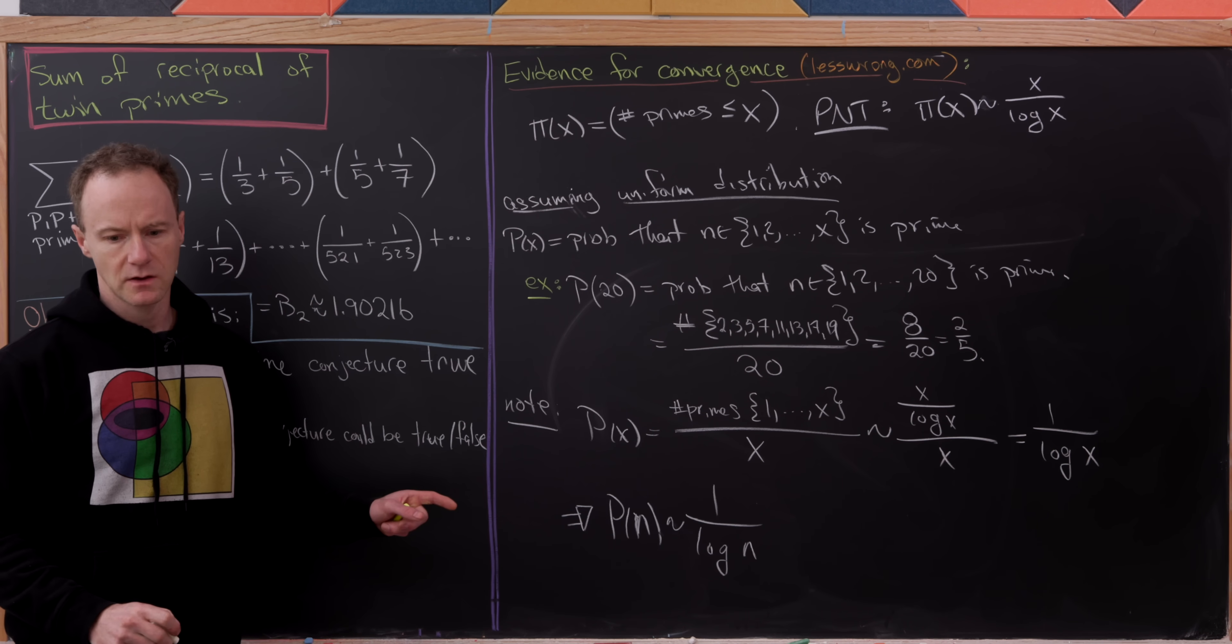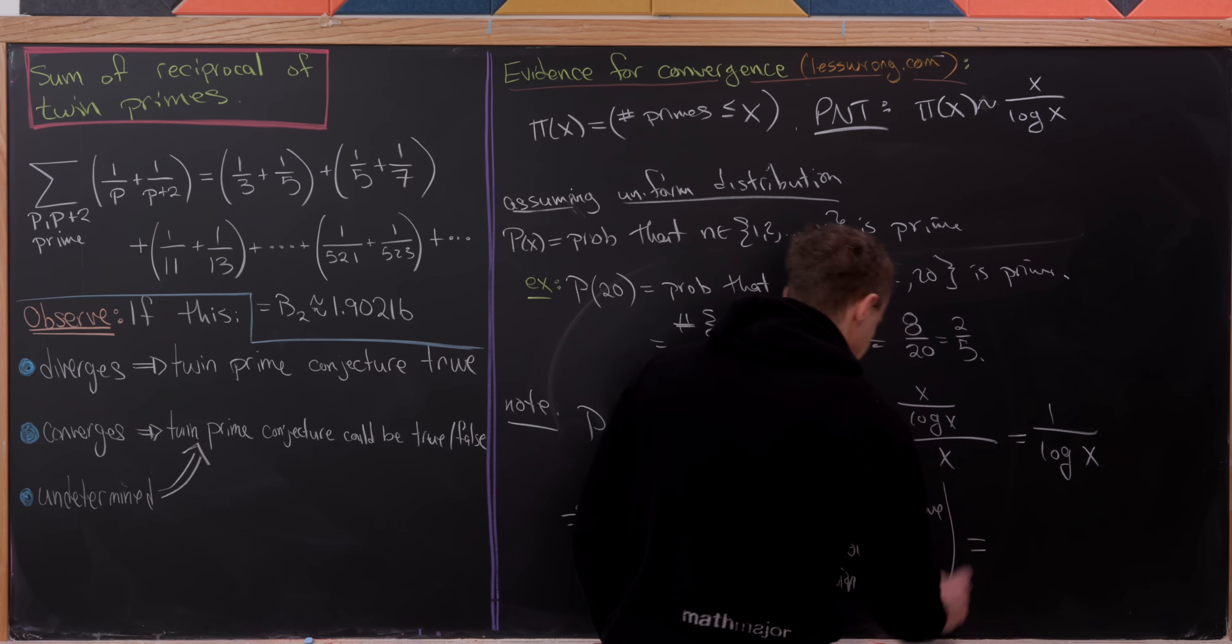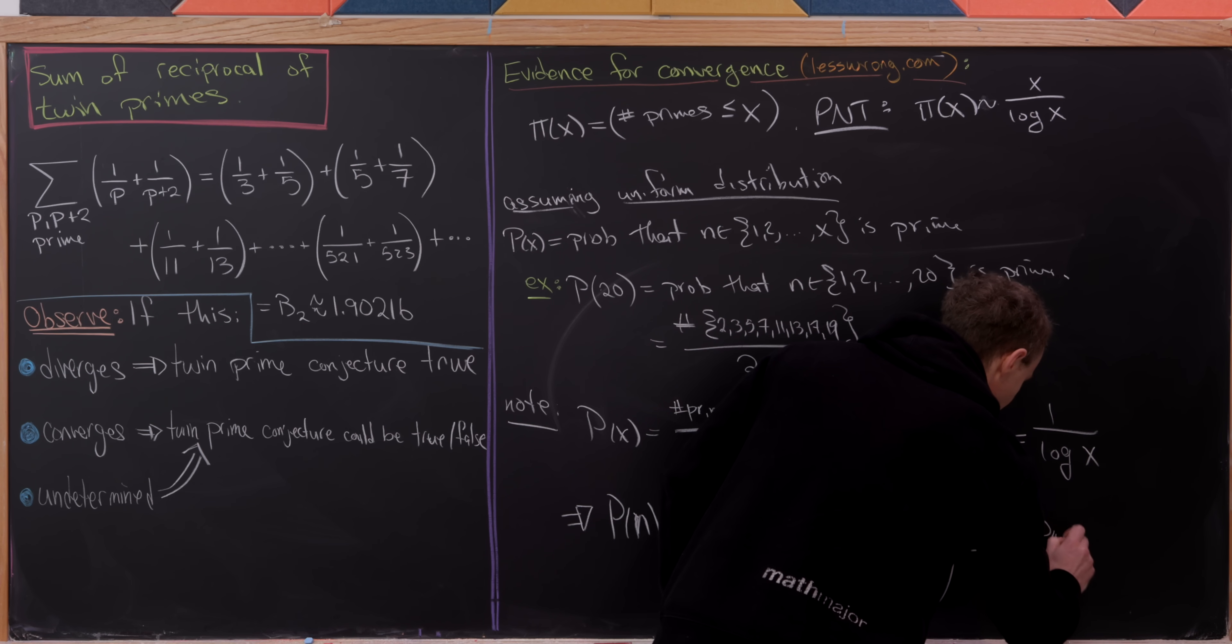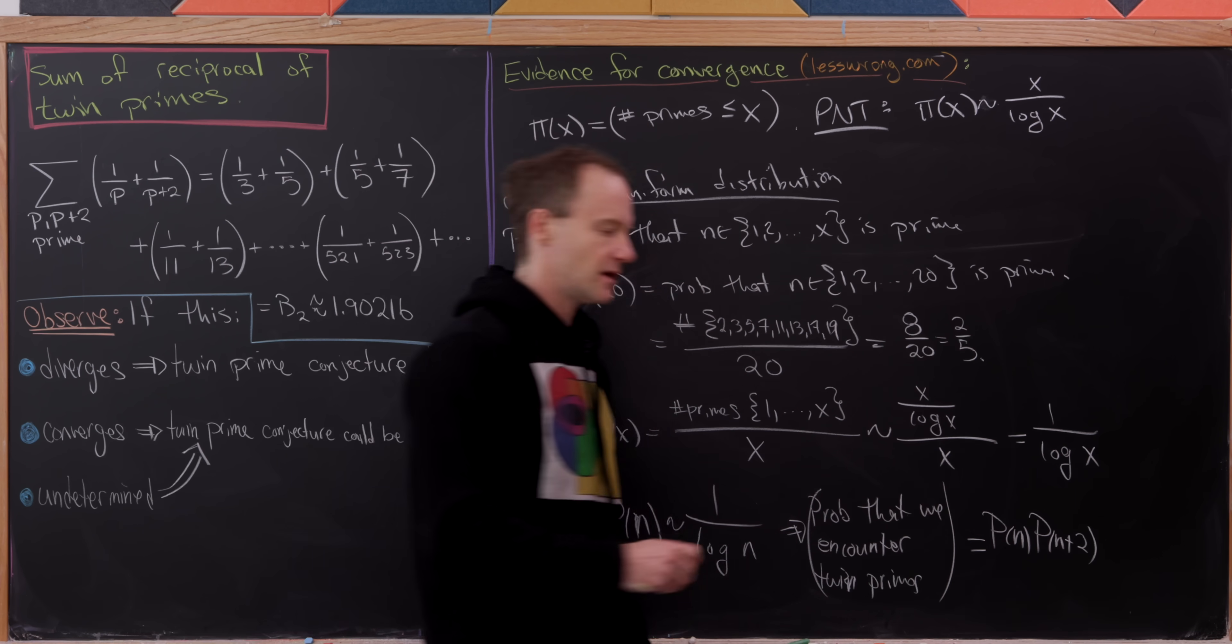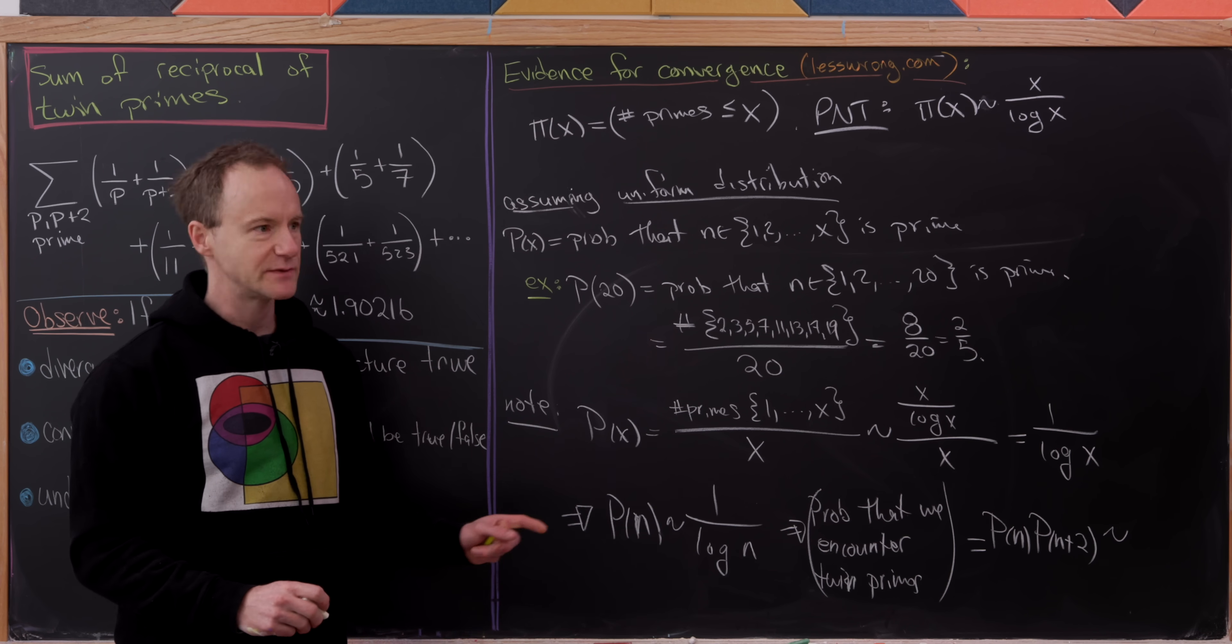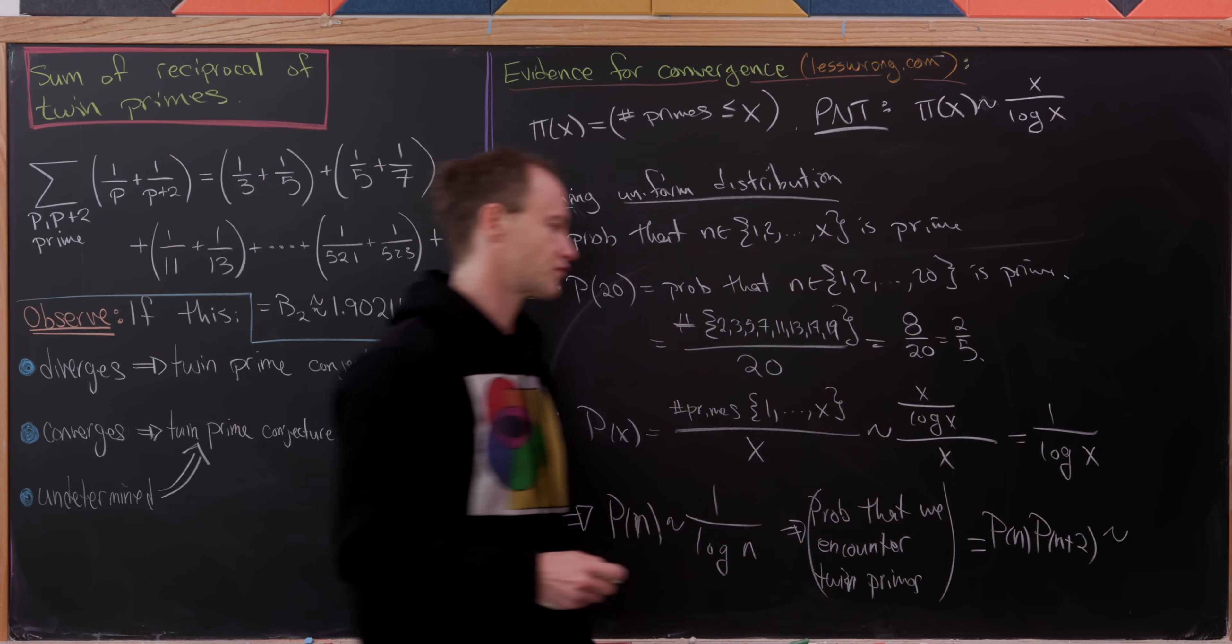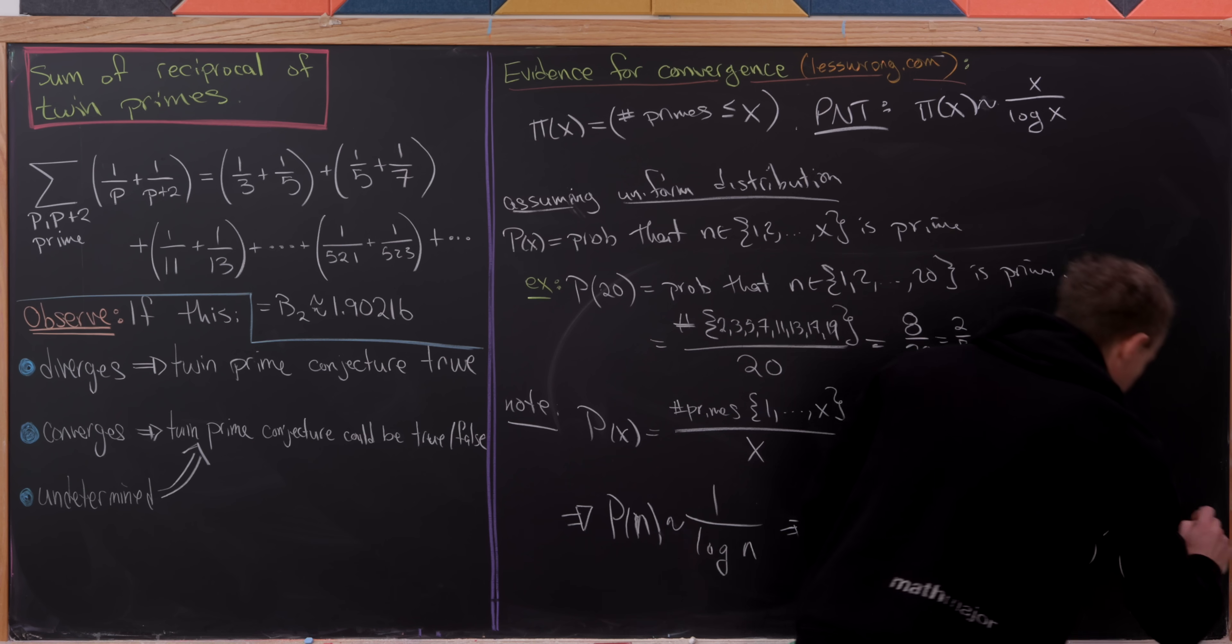Well what does that mean? Well that means that the probability that we encounter twin primes will be the product of the probability that n is prime and the probability that n plus 2 is prime. But observe that that's going to grow like 1 over log n times 1 over log(n + 2). But n plus 2 for large values of n is fairly close to n, so we might as well just write this as 1 over log n quantity squared.